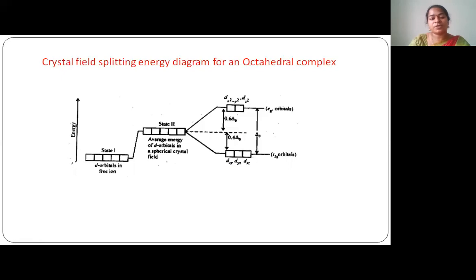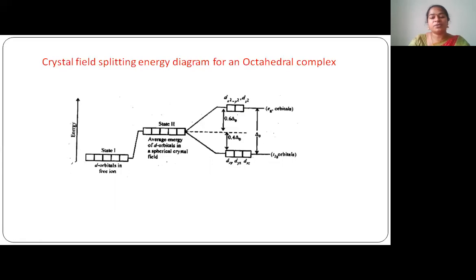In the octahedral complex, all the ligands approach the metal atom along the x, y, and z axes. The loops of the dx²-y² and dz² orbitals are also present along the x, y, and z axes, so these d orbitals repel more and go to higher energy compared to t2g. The energy difference between t2g and eg is called the crystal field stabilization energy of the octahedral complex, denoted as Δo. The crystal field stabilization energy of eg is 0.6 Δo and of t2g is 0.4 Δo.